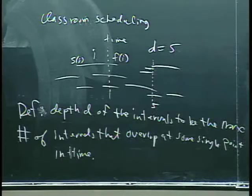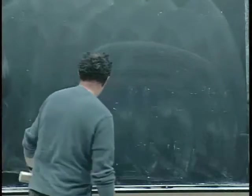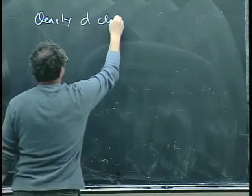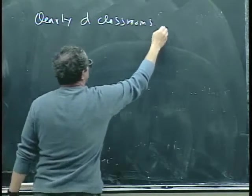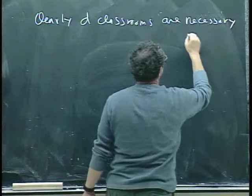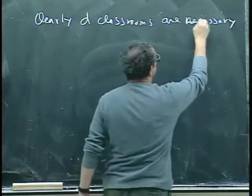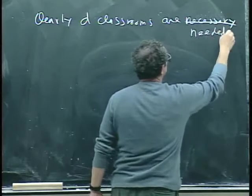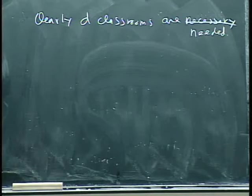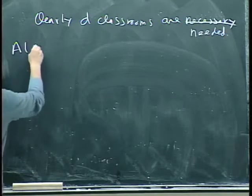So what we want to prove is that D is sufficient. So clearly, D classrooms are necessary. I can't spell necessary, so I'll just say needed. So D classrooms, at least, are needed. The question is, is D always enough? All right. So here's a little algorithm.